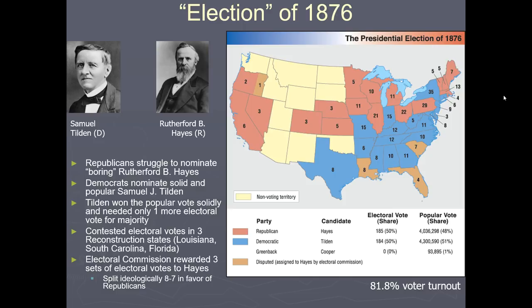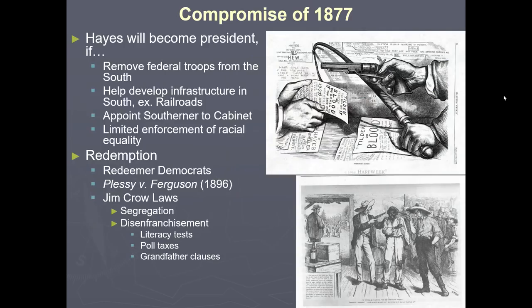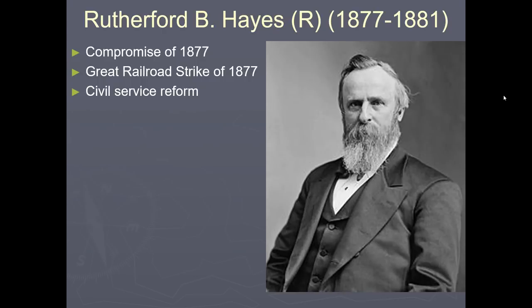In the election of 1876, Rutherford B. Hayes became president because there was a tie in the electoral college. Hayes was given the election in exchange for calling off Reconstruction — the Compromise of 1877. We've already discussed that so we're not going into it again.